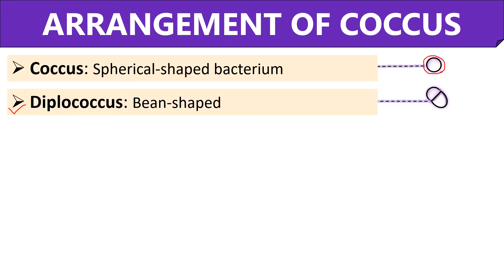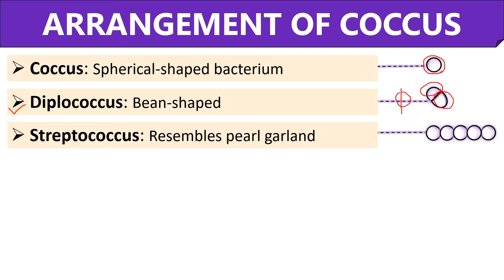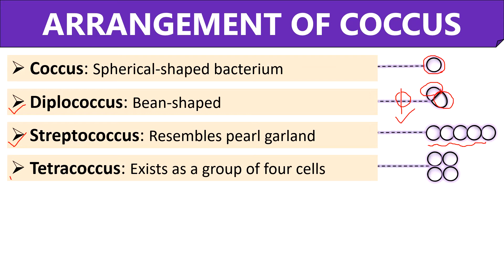First is Diplococcus, where the cells appear in pairs. They are somewhat similar to the shape of a coffee bean, and here the cell division occurs in one plane only. Second is Streptococcus, where the cells form a chain and they resemble a pearl garland; cell division also occurs in one plane. Third is Tetracoccus, which exists as a group of four cells where each cell remains joined with the others, and cell division occurs in two planes.